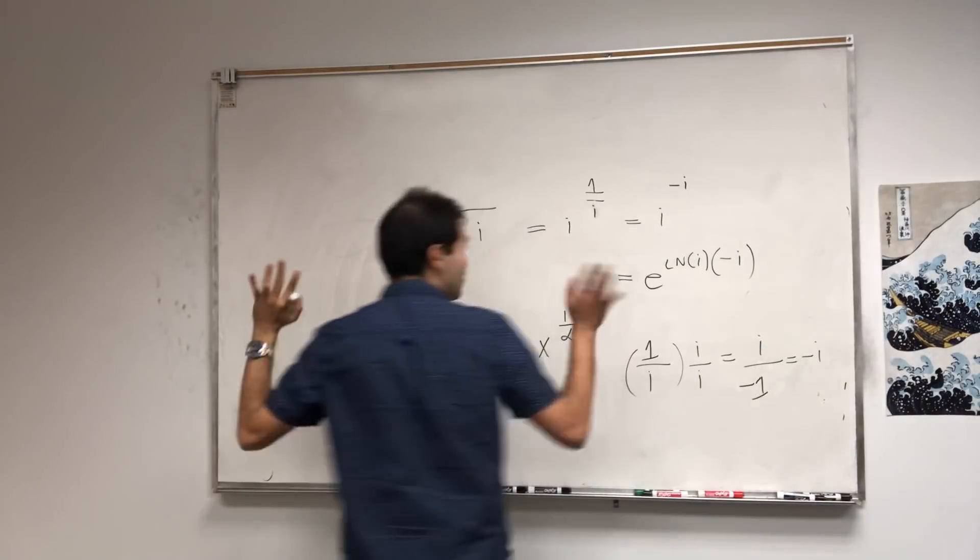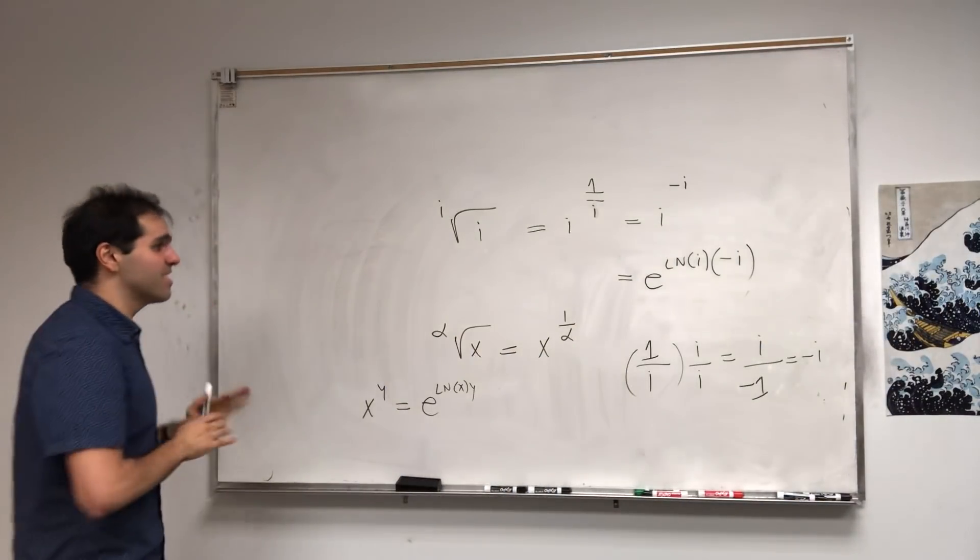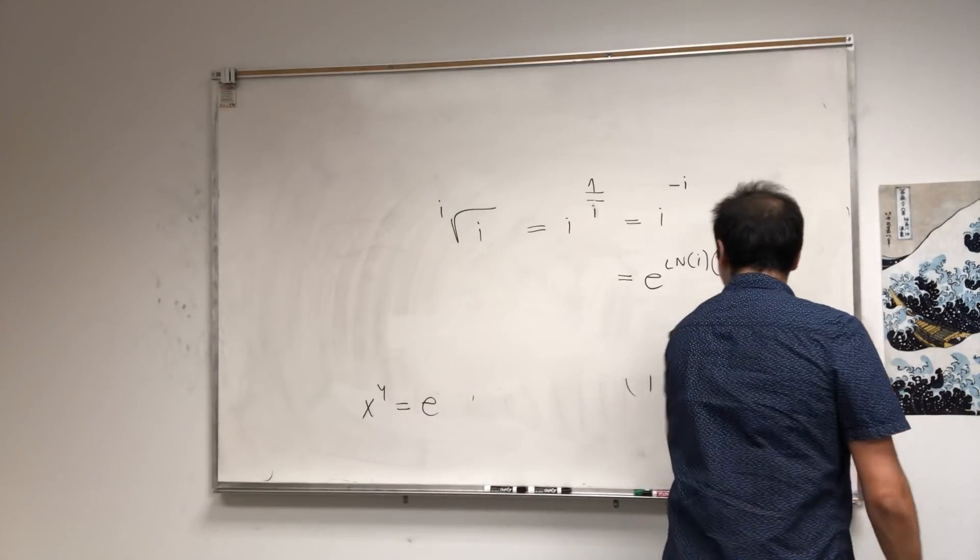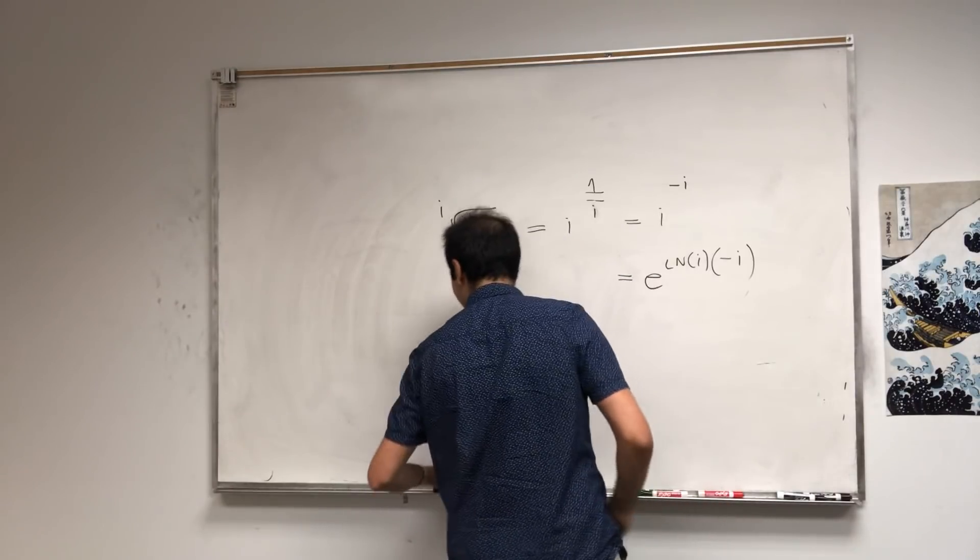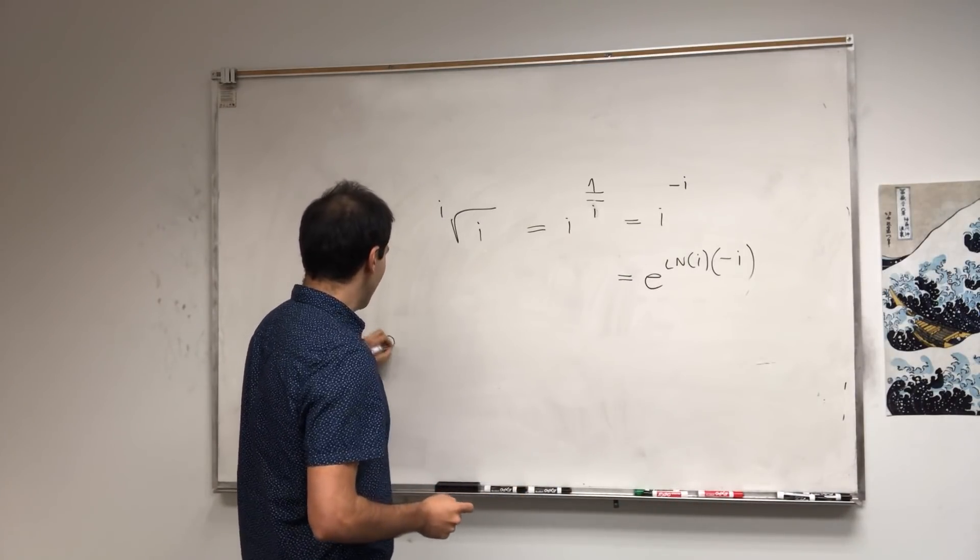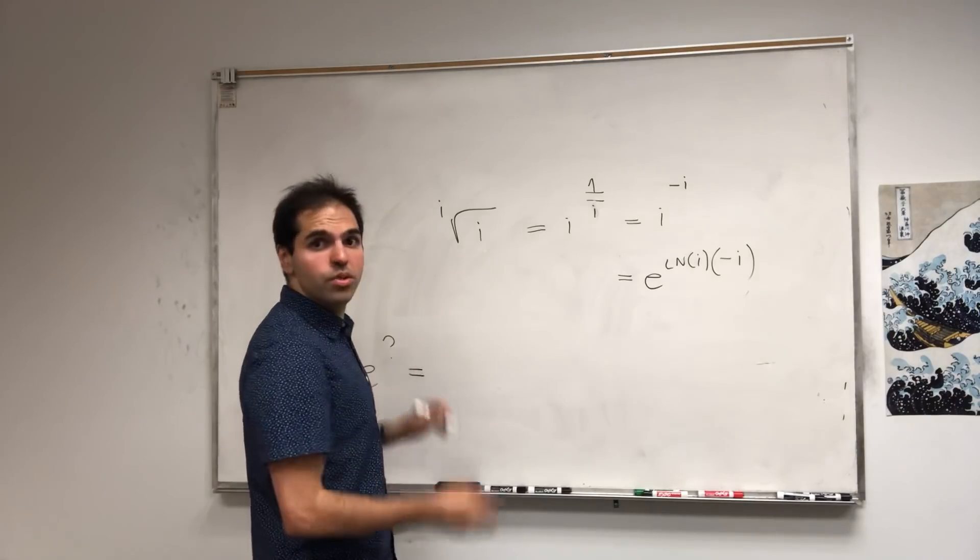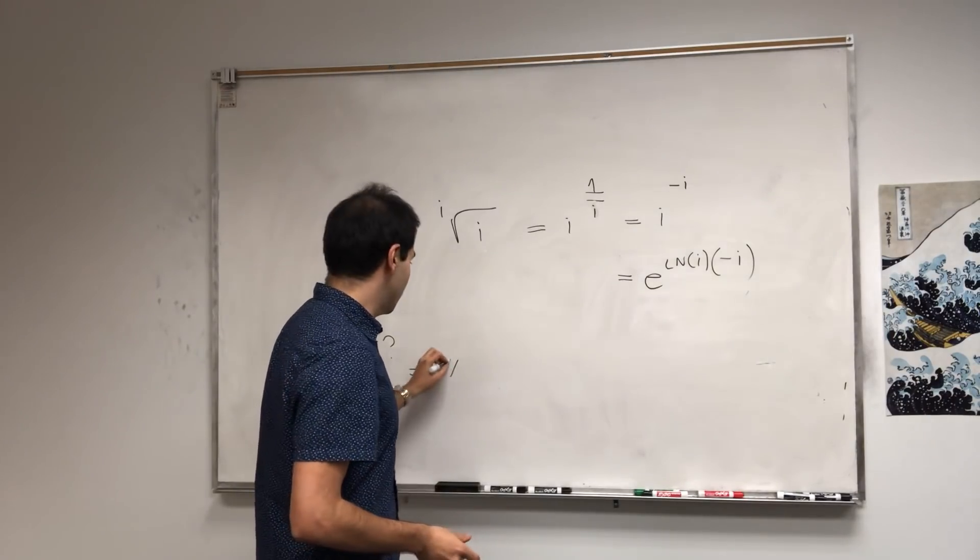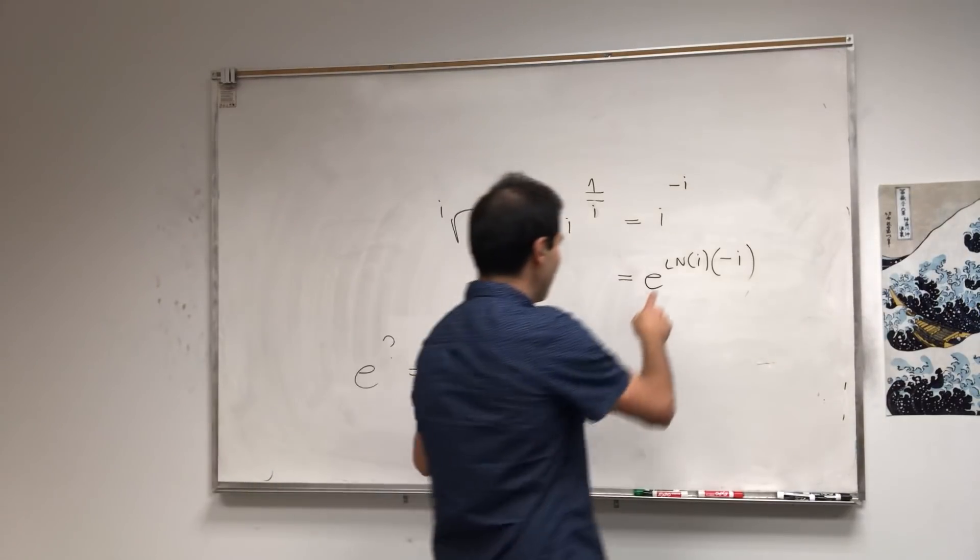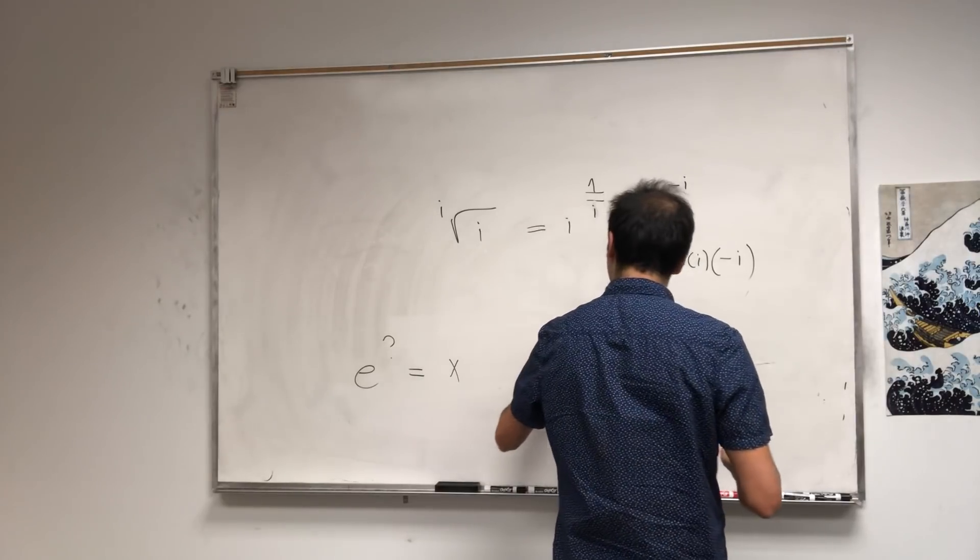And now you have to be careful because there's this ambiguity about ln of i because ln, what this is, it's the number you have to raise e to to get your number, right? So ln of x, it's e to the l equals x. So now the question is, what is ln of i?